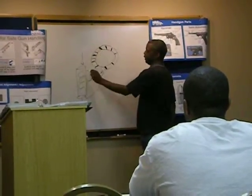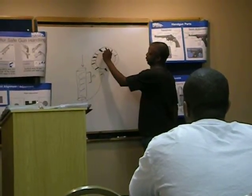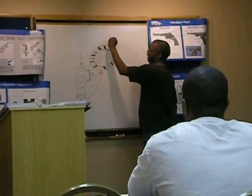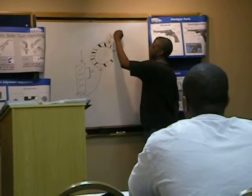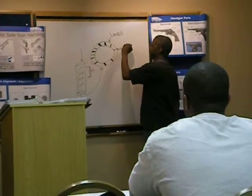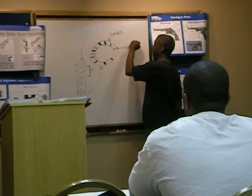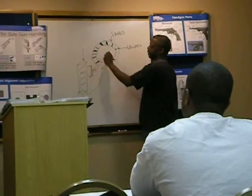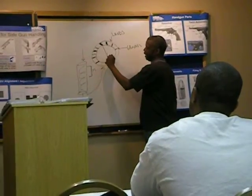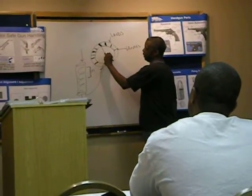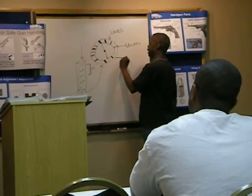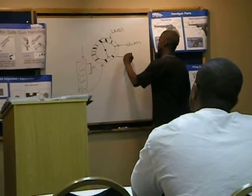In this barrel are these grooves and these flat spaces. The flat spaces are called lands, and these grooves are just called grooves. The distance between an opposing groove and a land that goes through the diameter of the barrel is what is known as caliber.